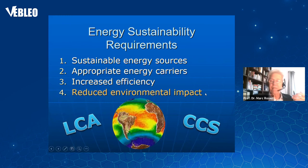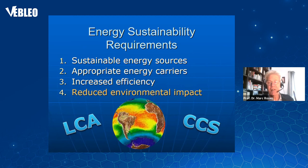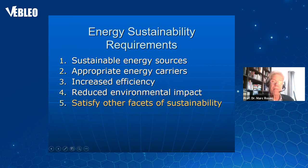The fourth energy sustainability requirement is reduction in environmental impact — addressing climate change by stopping the increase in average temperature. This thermogram of the Earth shows average temperatures have increased about one degree over roughly 70 years, mostly in the last 30–40 years. Tools like life cycle assessment give a better understanding of the broad environmental impact of technologies from cradle to grave. Carbon capture and sequestration (CCS) is the dream of the fossil fuel industry: capturing the main greenhouse gas CO₂ before it leaves the plant and storing it permanently.